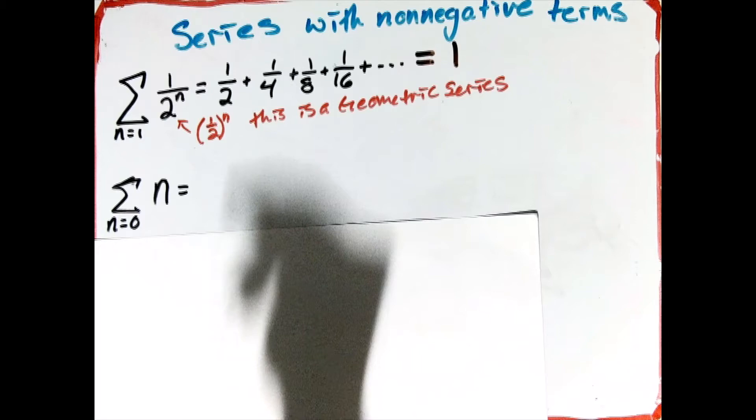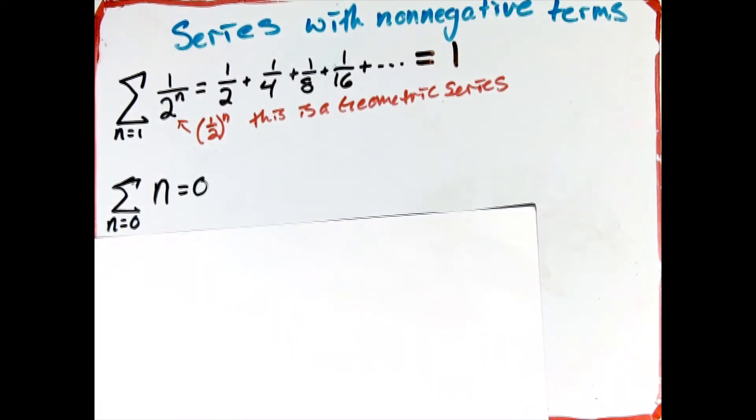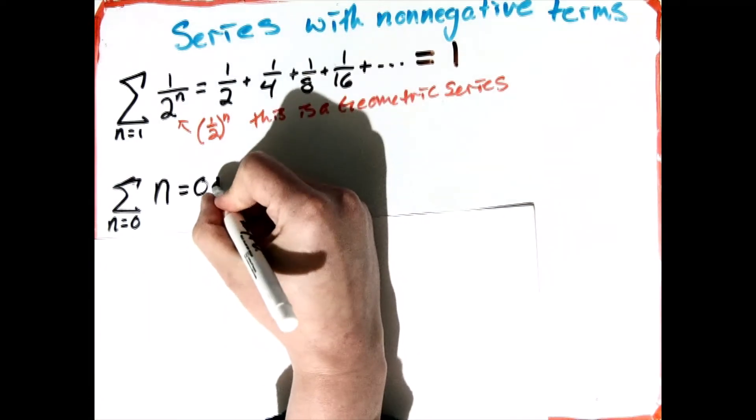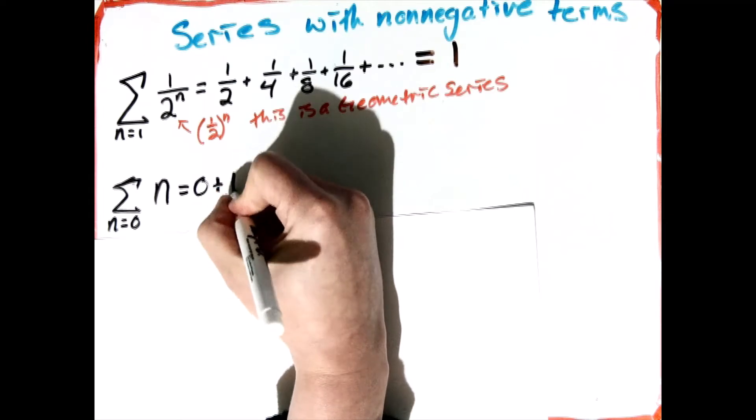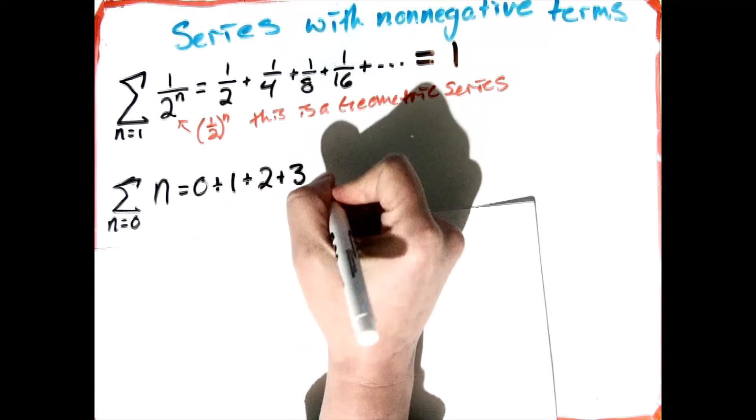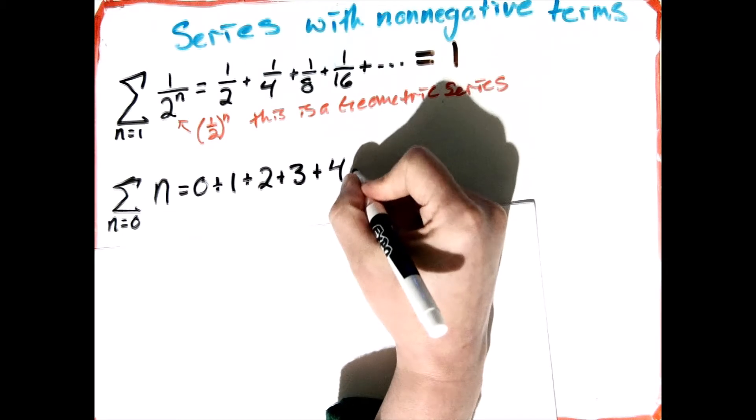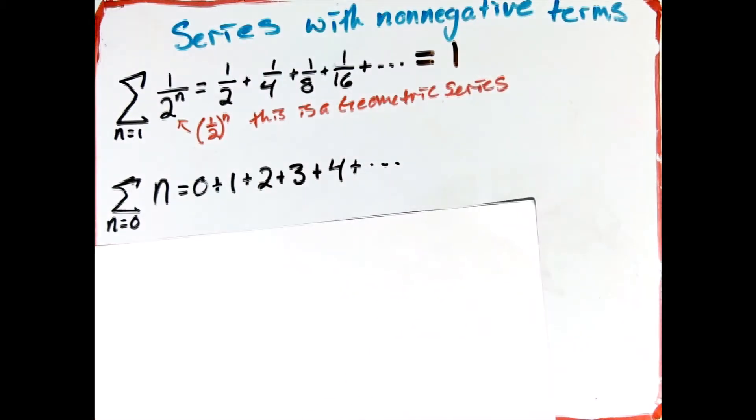My next series I might have is just the sum of the whole numbers. So here I just tacked on 0. I would have the same summation if I had started at n equals 1, but I just wanted to start at n equals 0 to remind you that 0 is a non-negative term, and so that's completely fine.